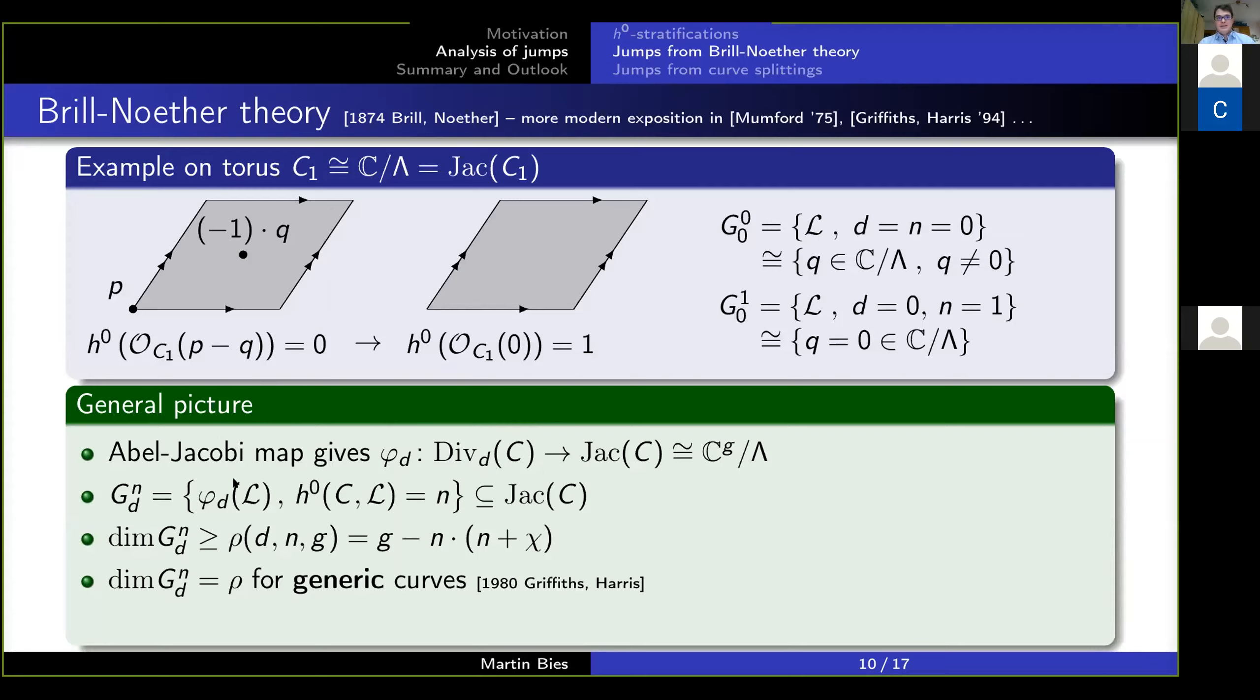That is just the generalization of what I've written up here. And the statement about Brill-Noether theory is that the dimension of this space G^n_d is bounded below by a constant rho, which is just the genus of the curve, minus n, the number of sections that we consider, times n plus chi. So that is n minus 1.